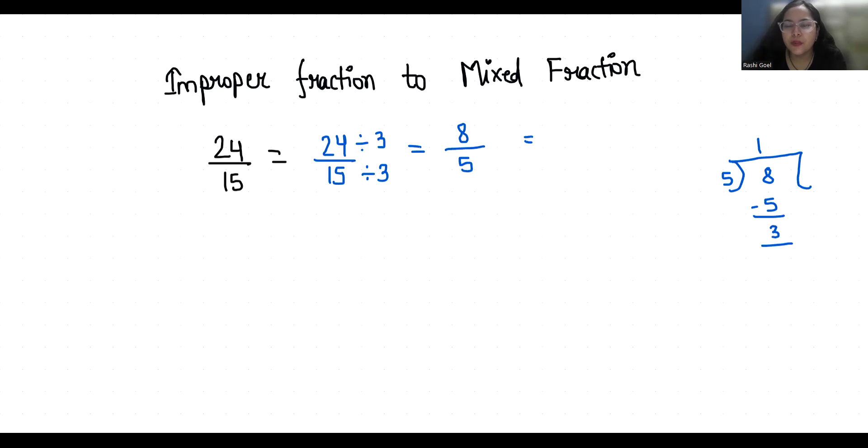So we will write the denominator as it is placed and write the quotient in whole and remainder in numerator. So it gave us 1 whole 3 by 5.